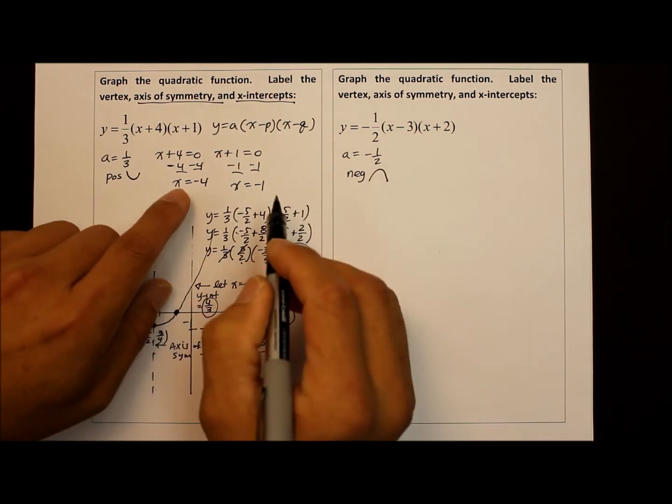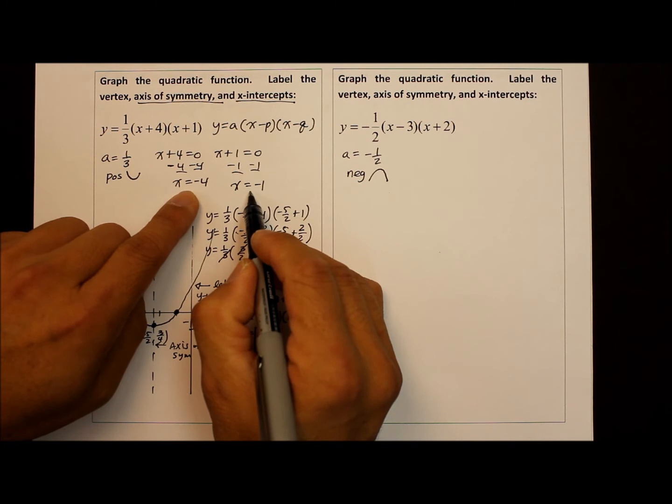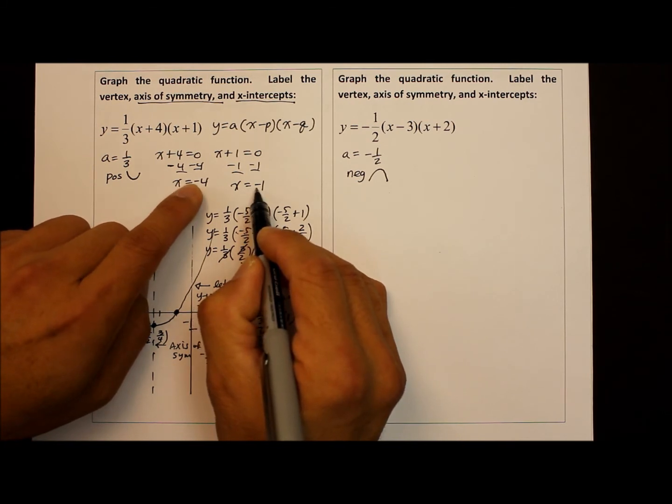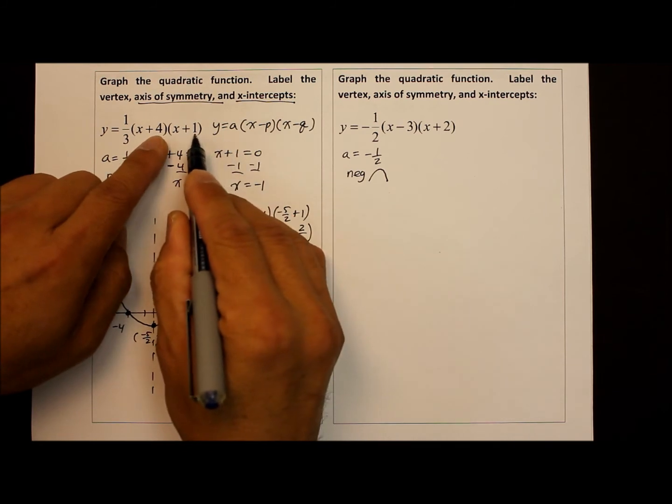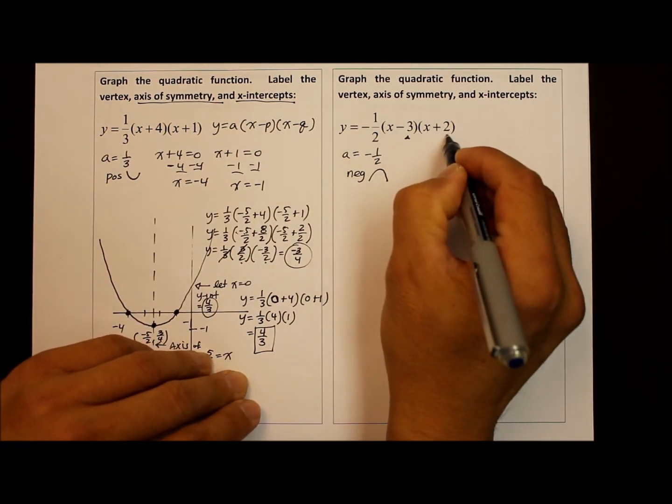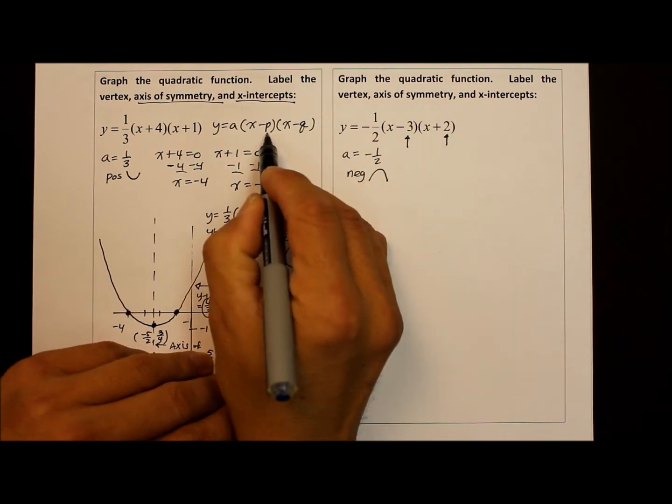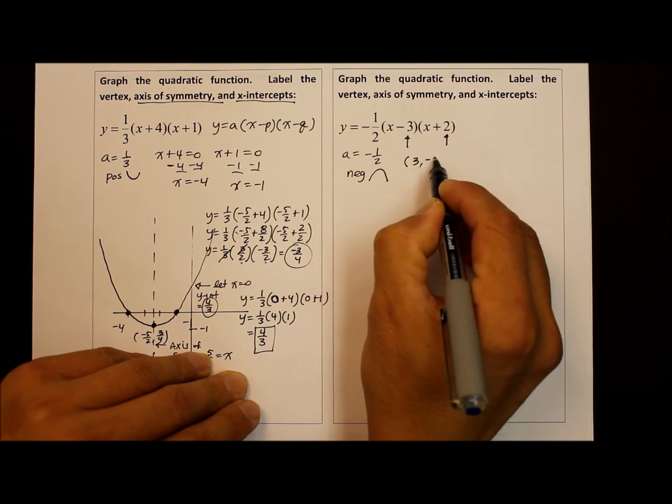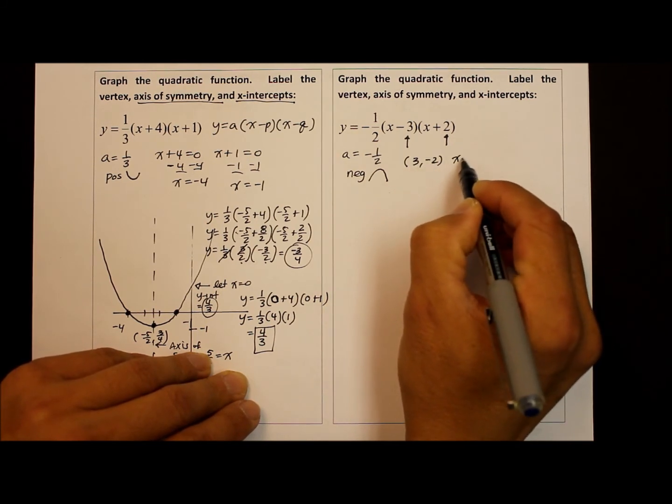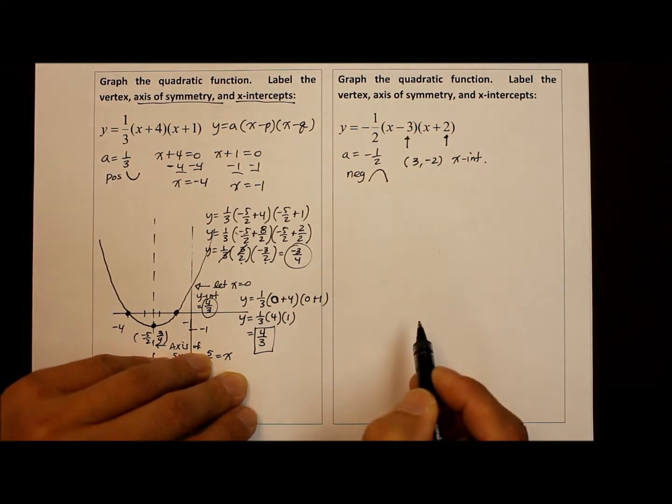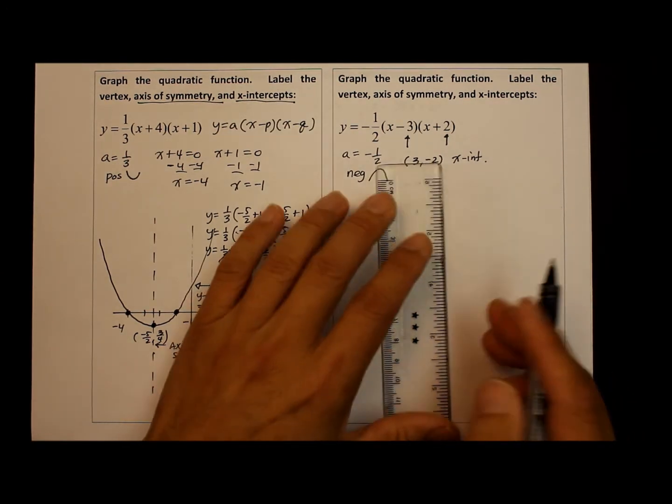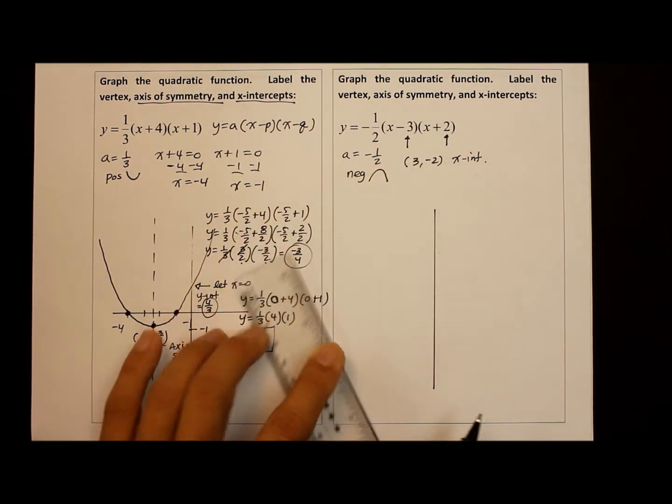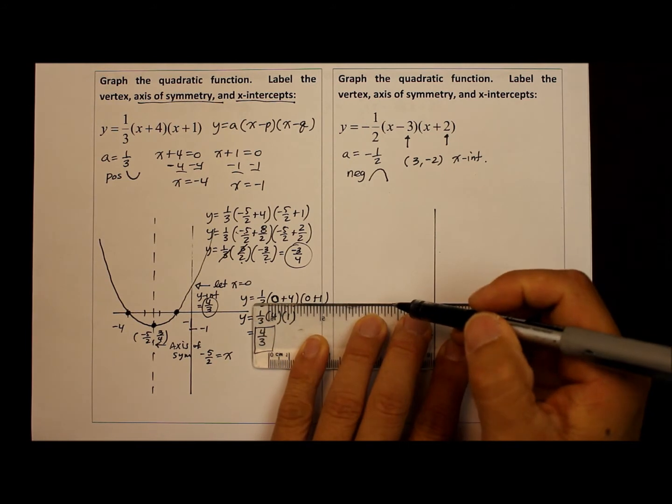We realize by using the zero product property, the two x-intercepts are actually the inverse of the given constants. So in this case, where p and q should be is the opposite of negative three, so it's three, and the opposite of negative two, so it's positive two. That's going to be the x-intercepts. So we could go ahead and draw the parabola already from that point on.